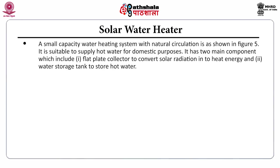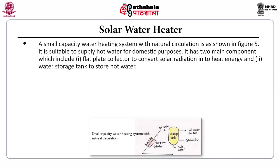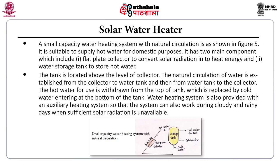The solar water heater: a small capacity water heating system with natural circulation is suitable for domestic hot water supply. It has two main components — a flat plate collector to convert solar radiation into heat energy, and a water storage tank located above the collector. Natural circulation is established between the collector and tank. Hot water is withdrawn from the top of the tank and replaced by cold water at the bottom. An auxiliary heating system ensures operation during cloudy and rainy days.